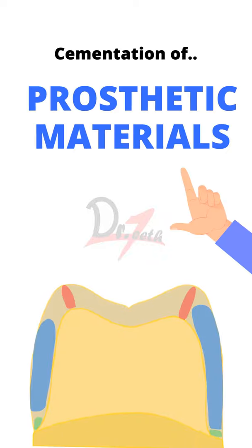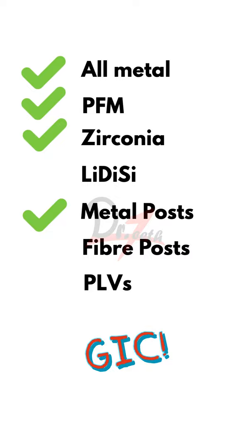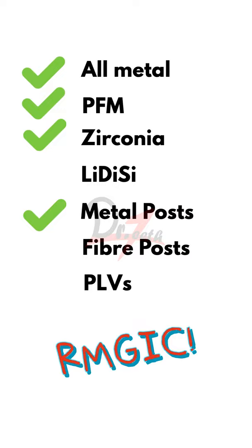Let us see which type of cements are more suitable for which type of materials. Here we have different kinds of prosthetic materials. The GIC can be used for all metal, PFM, zirconia, and metal post. However, resin-modified GIC in addition can be used for lithium disilicate.